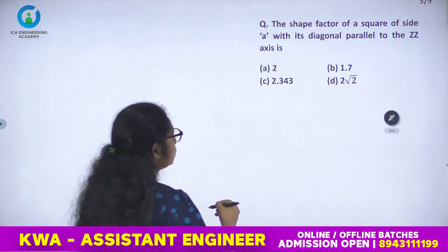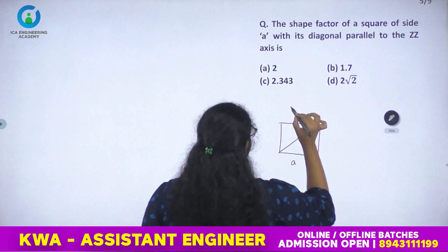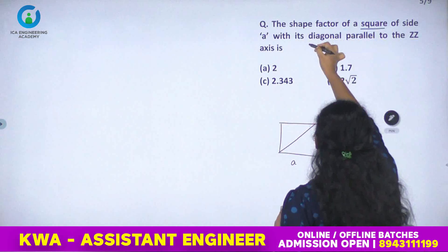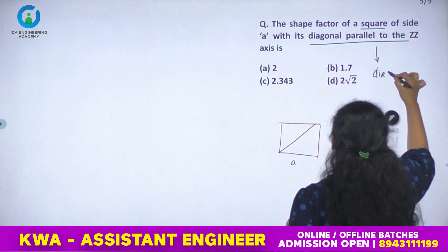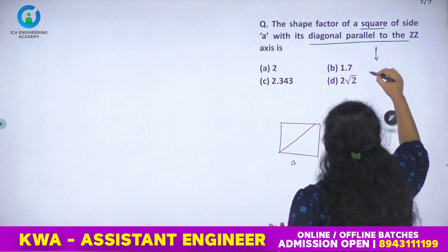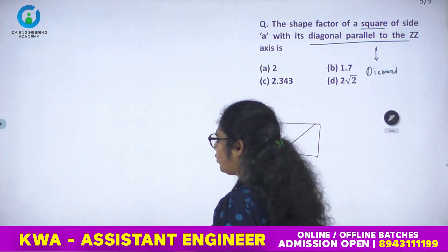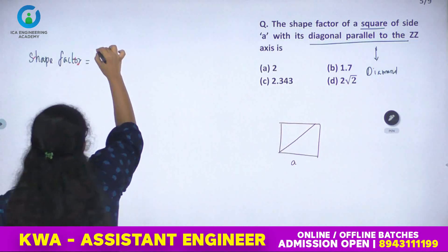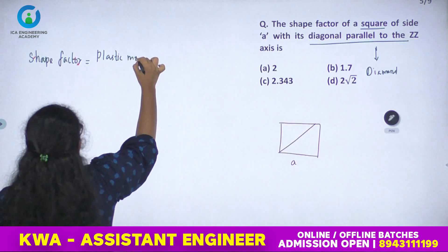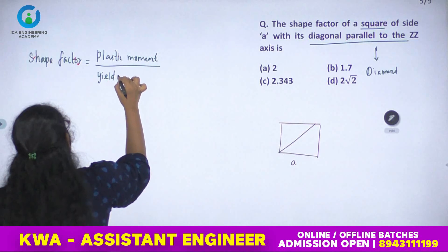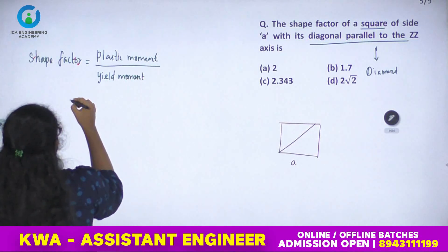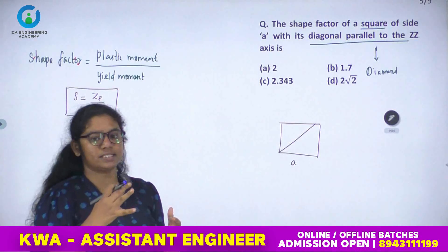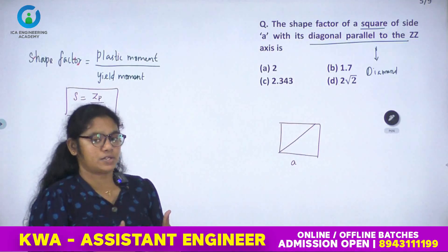Next question: the shape factor of a square with its diagonal parallel to the Z-axis. When the diagonal is parallel to the ZZ axis, we treat the section as a diamond shape. Shape factor S equals plastic moment divided by yield moment, which is ZP divided by ZE.